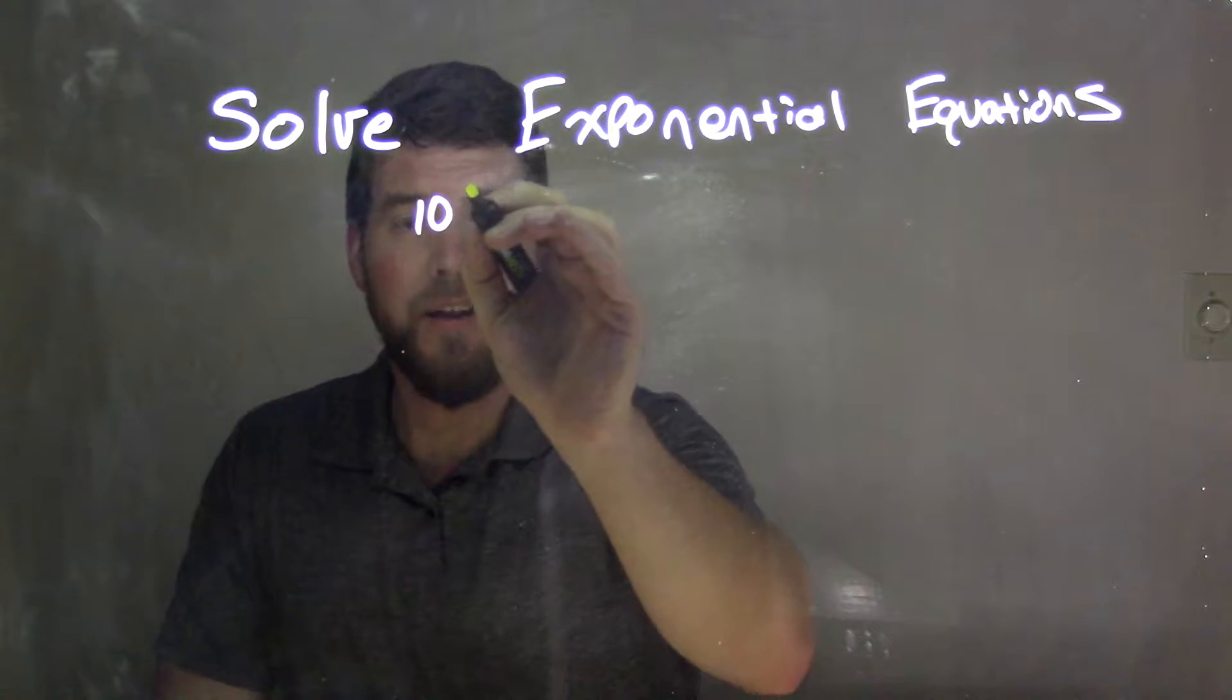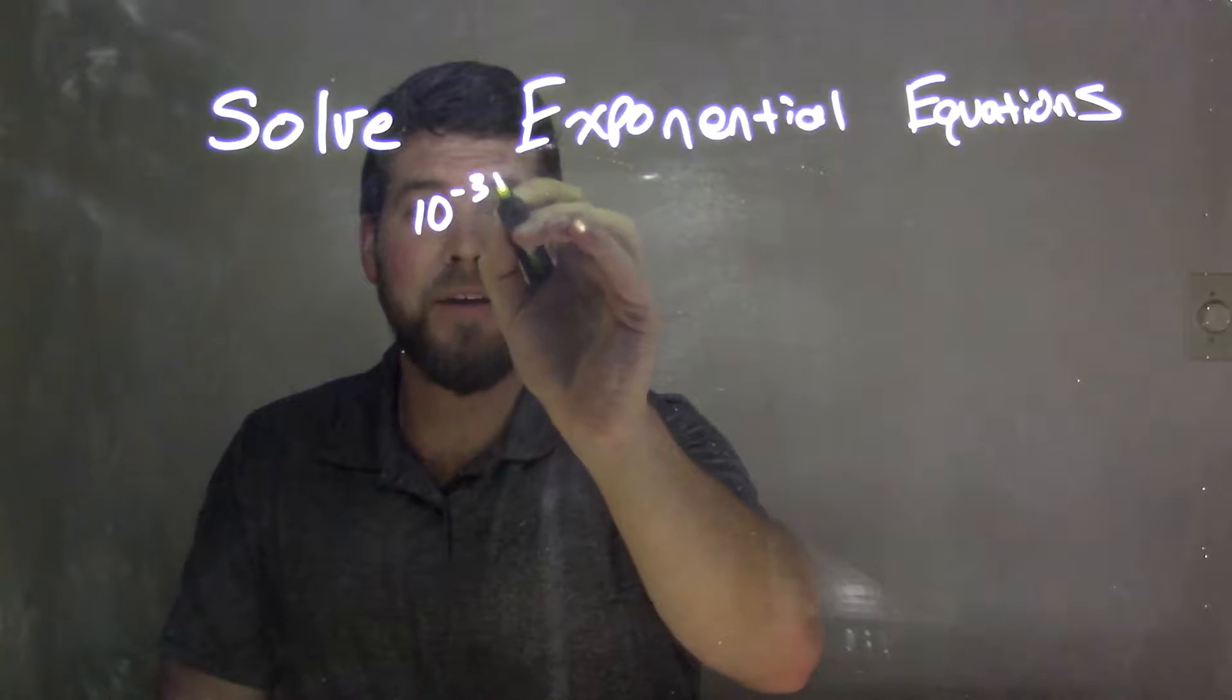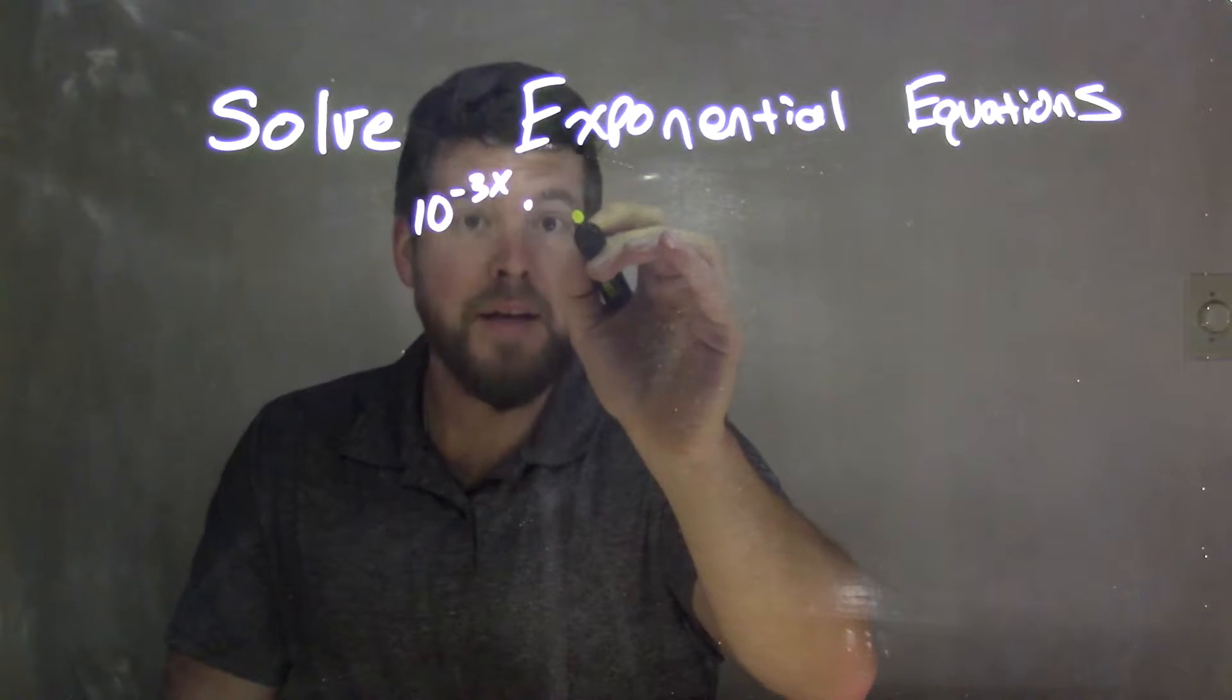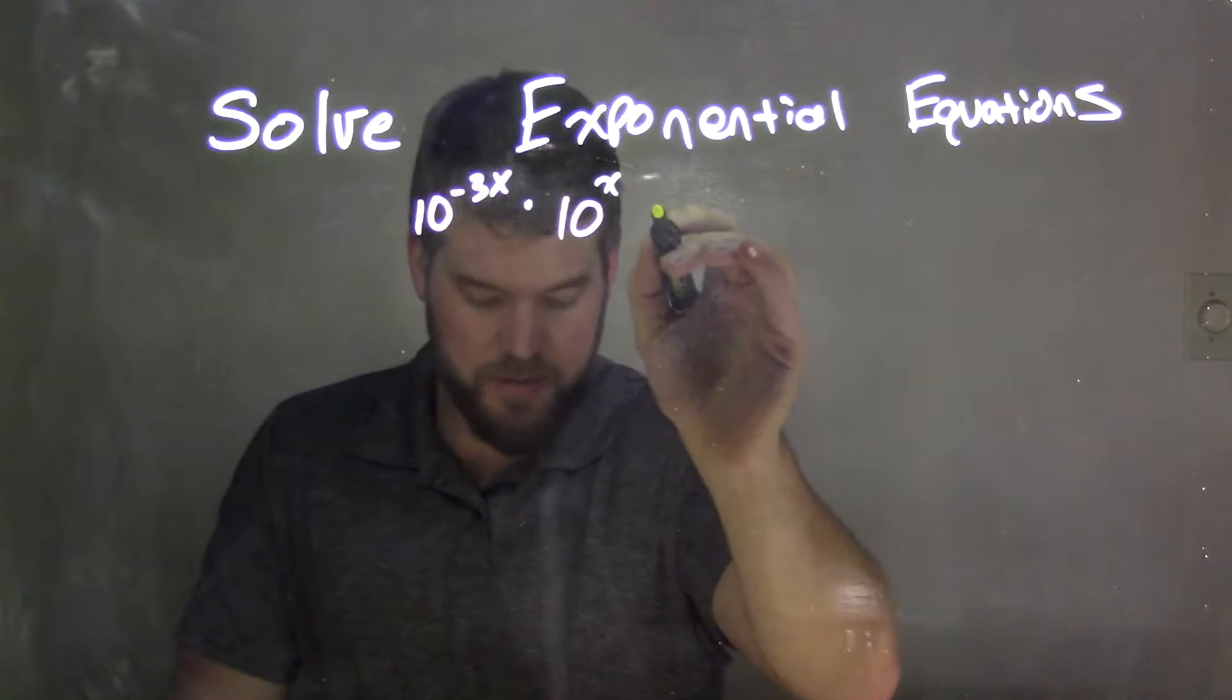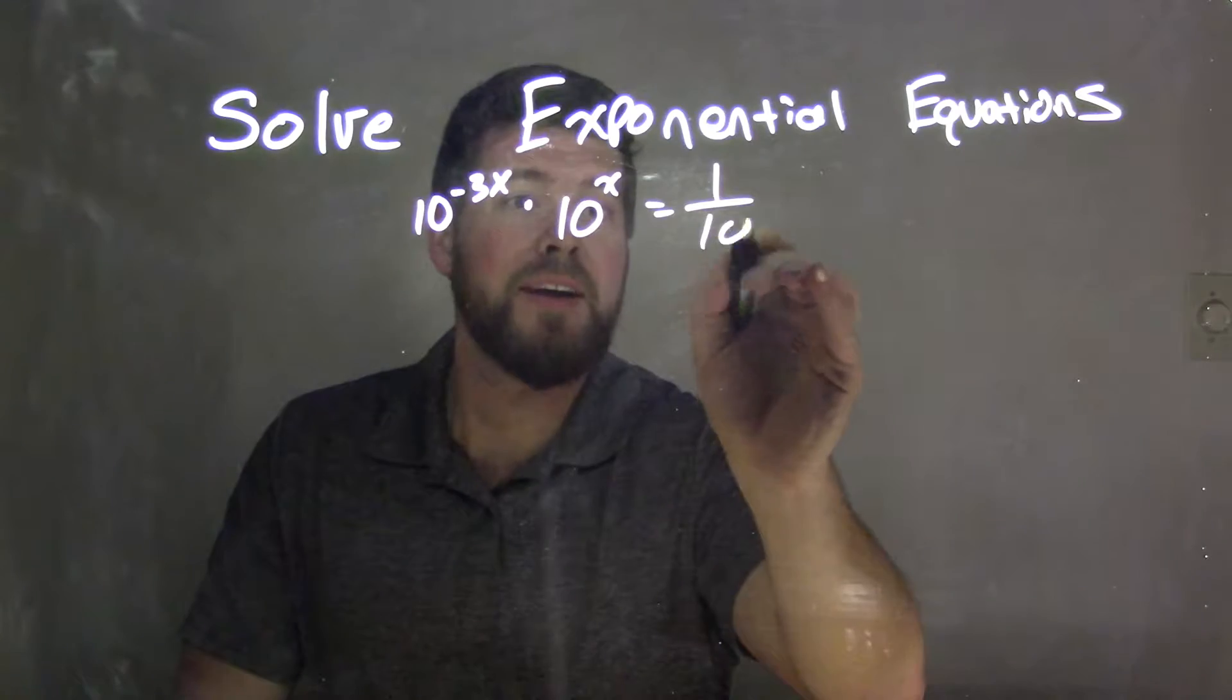So our equation here is 10^(-3x) times 10^x, and that is equal to 1 over 10.